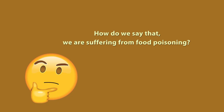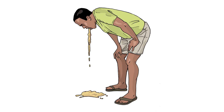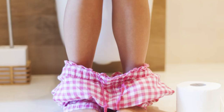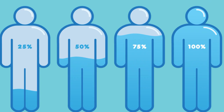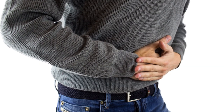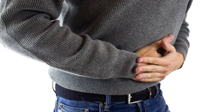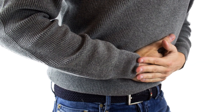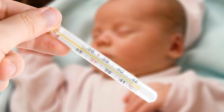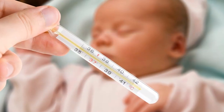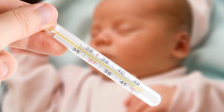How do you know that you are suffering from food poisoning? The first sign of food poisoning is frequent vomiting, even before we experience abdominal pain. Fever is also a sign of food poisoning.